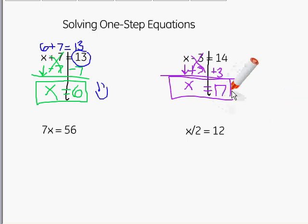Again, we can check this. Take this 17 and plug it back in for x. And I get 17 minus 3 equals, well, 17 minus 3 gives us 14. And since we got that 14, we know that x equals 17 is the correct answer.